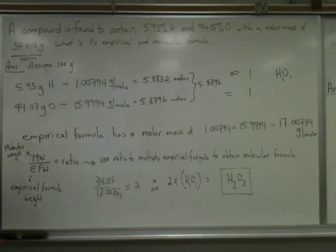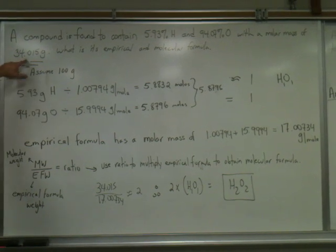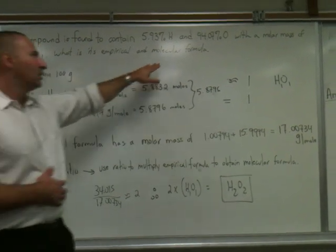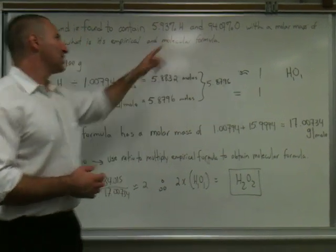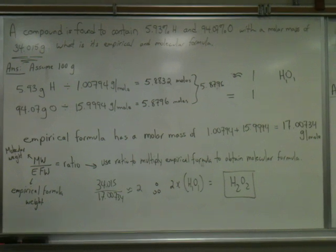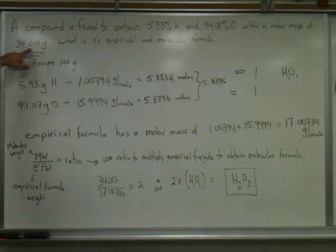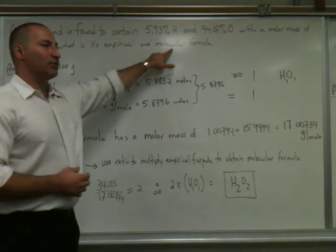In this problem, they give you three pieces of information. There are only two elements in the compound. The third piece of information is necessary to find the molecular formula, because sometimes you're given information to find the empirical formula, but if you're not given the molecular mass, you can't find the molecular formula. You need the molecular mass to be able to find the molecular formula.